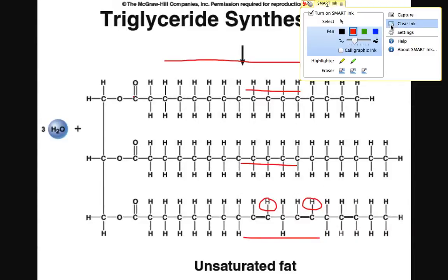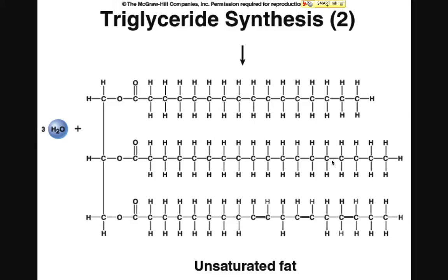Looking at this picture, we can see that this fat is going to be synthesized following three individual dehydration reactions, forming three individual ester linkages. This fat, or triglyceride, consists of two saturated fatty acid chains and one unsaturated fatty acid chain. We classify this fat as unsaturated because it has at least one fatty acid chain with at least one carbon-carbon double bond. The carbon chain length can be different, as can the presence or absence of carbon-carbon double bonds.